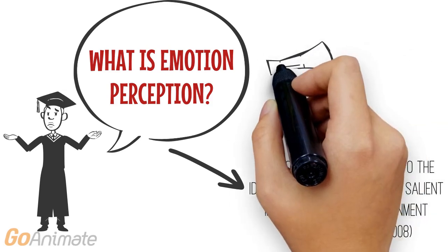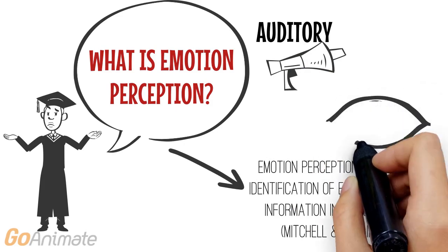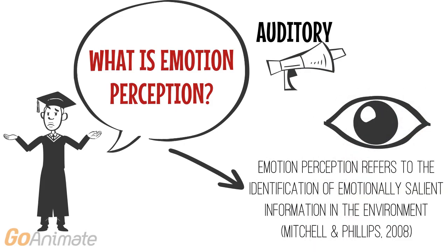Scholars have identified two broad ways that humans perceive emotion: auditory means, such as one's vocal inflections, and visual means, such as their facial expressions or posture. Thus, emotion perception provides the resources that inform inferences made about the emotional state of others, and is therefore considered an important ability in social functioning and communication.